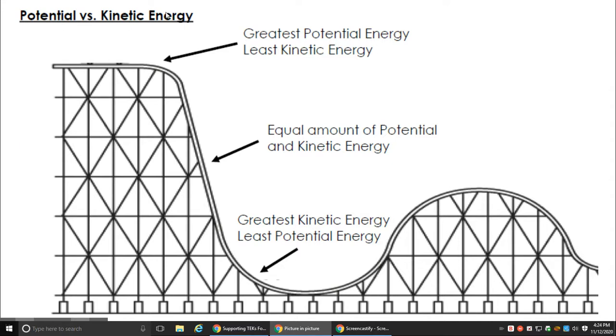Potential energy versus kinetic energy. So at the top of the roller coaster we have the greatest potential energy and the least kinetic. Greatest potential because it's highly elevated off the ground. Least kinetic because it's not moving. As the roller coaster rolls down the hill, our potential starts to transform into kinetic and it's about 50-50. We have equal amounts of potential and kinetic energy. As the roller coaster gets to the bottom of the hill we have the greatest kinetic energy, energy of motion, and the least potential energy.